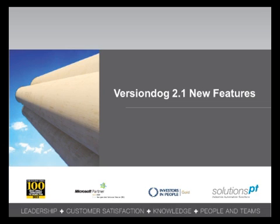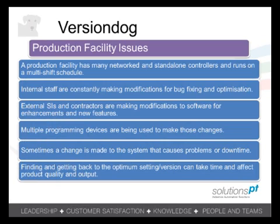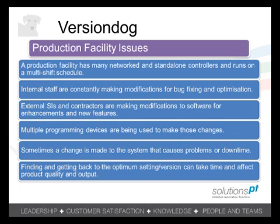VersionDog came about because of the following issues. Automation facilities may have many devices controlling and monitoring the machines on site. These could be connected to the network or stand alone and could be running 24-7 over multiple shifts. Engineers on site have to make changes to fix or optimise machinery.